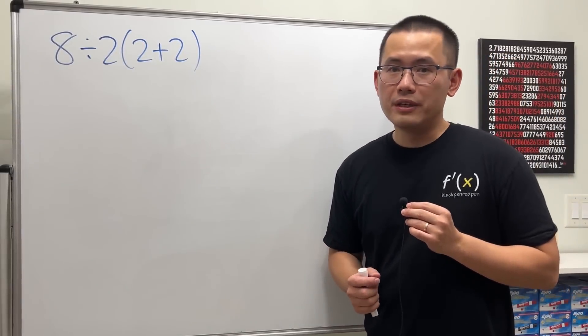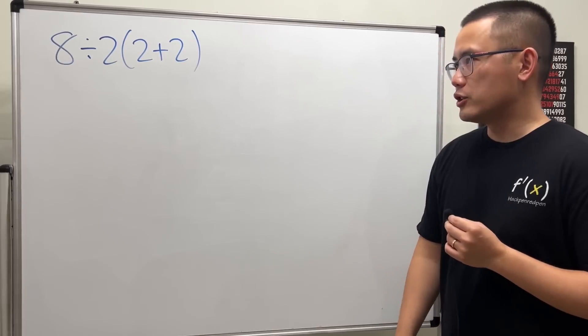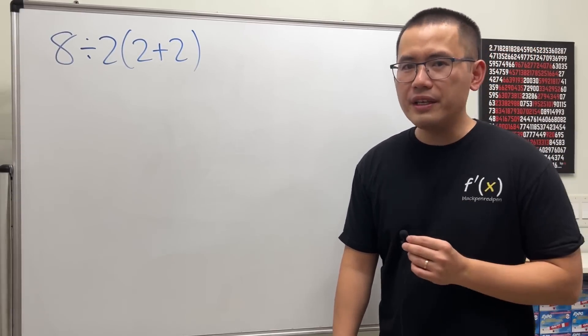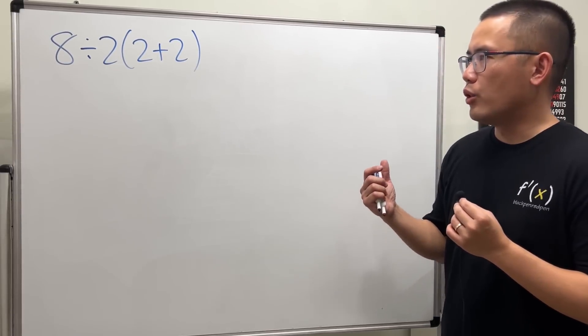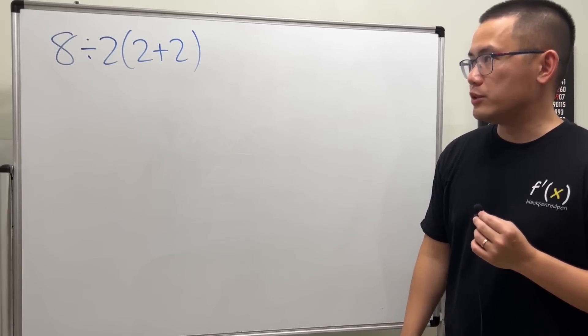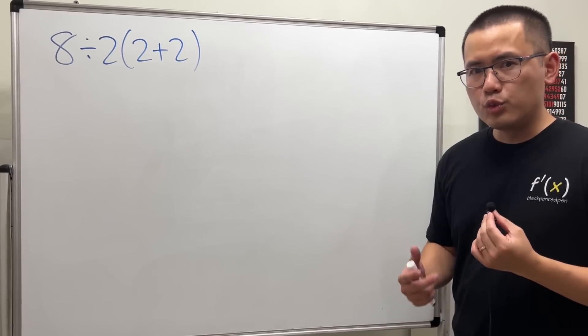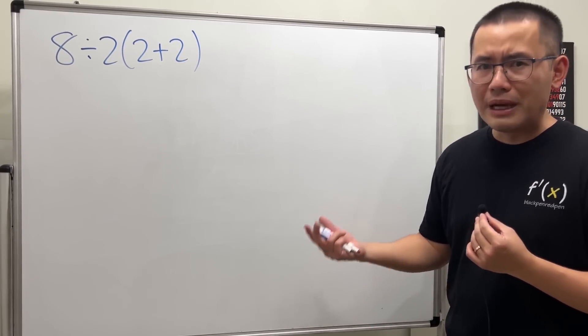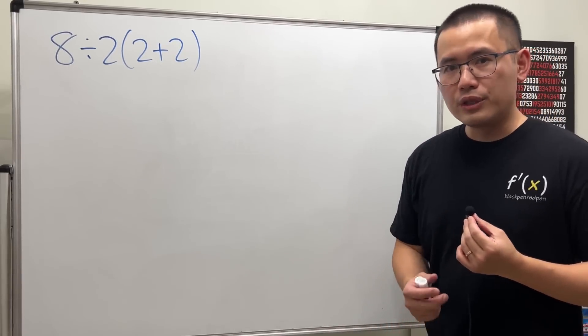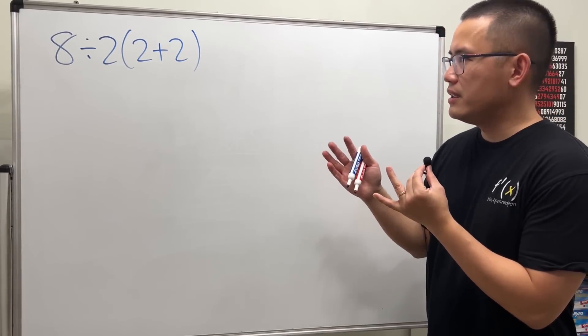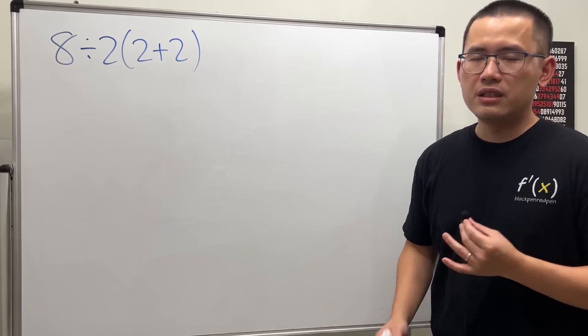Originally I didn't want to make a video on this because there are so many videos on the internet already. However, today was the first day of my class and I was going over order of operations with my students as a review. I thought it would be fun to give them a viral math question from the internet, so I gave them this. And you guessed it—some people were saying the answer is one, and some people are saying the answer is 16.